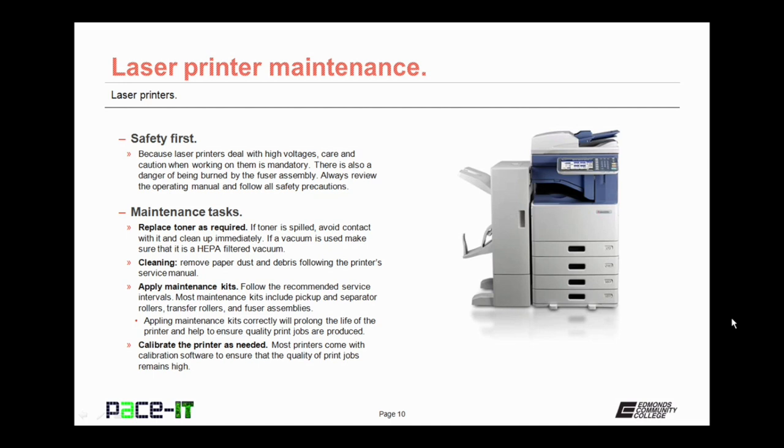Then there are maintenance kits. You need to apply maintenance kits at the recommended service intervals. Most of the time those service intervals are based on the number of pages that are printed. Most maintenance kits include new pickup and separator rollers, transfer rollers, and fuser assemblies. Applying the maintenance kits correctly will prolong the life of the printer and help to ensure that quality print jobs are produced. And finally, you need to calibrate the printer as needed. Most printers come with calibration software to ensure that the quality of the print jobs remains high.